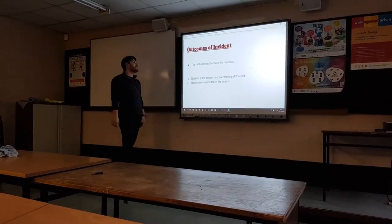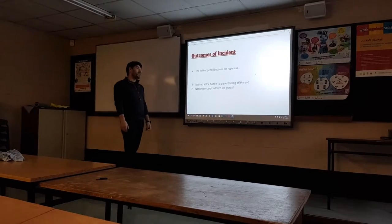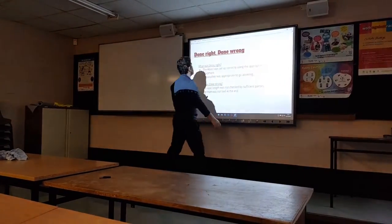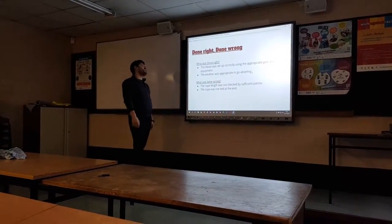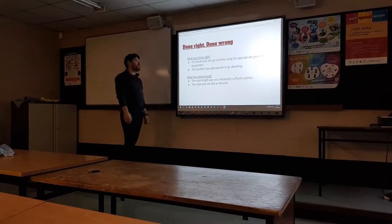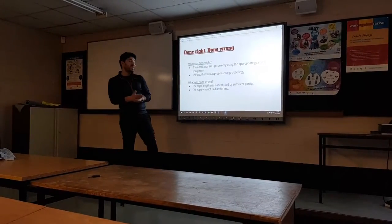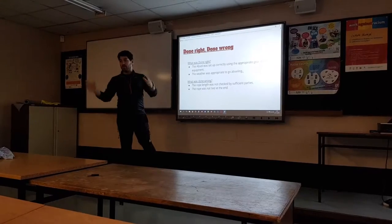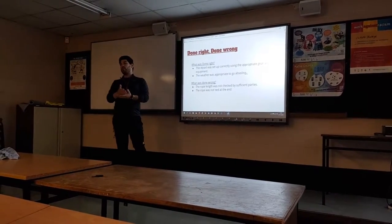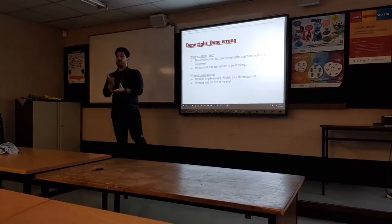The outcomes of the accident. The fall happened because the rope was either not tied at the bottom, causing me to fall off the end, or it was not long enough. What was done right: the abseil was set up correctly using appropriate gear and equipment, the weather was appropriate for abseiling, and we were working within government body legislation requirements. The gear used — a static rope, slings, carabiners, and harnesses — was appropriate for the abseil.